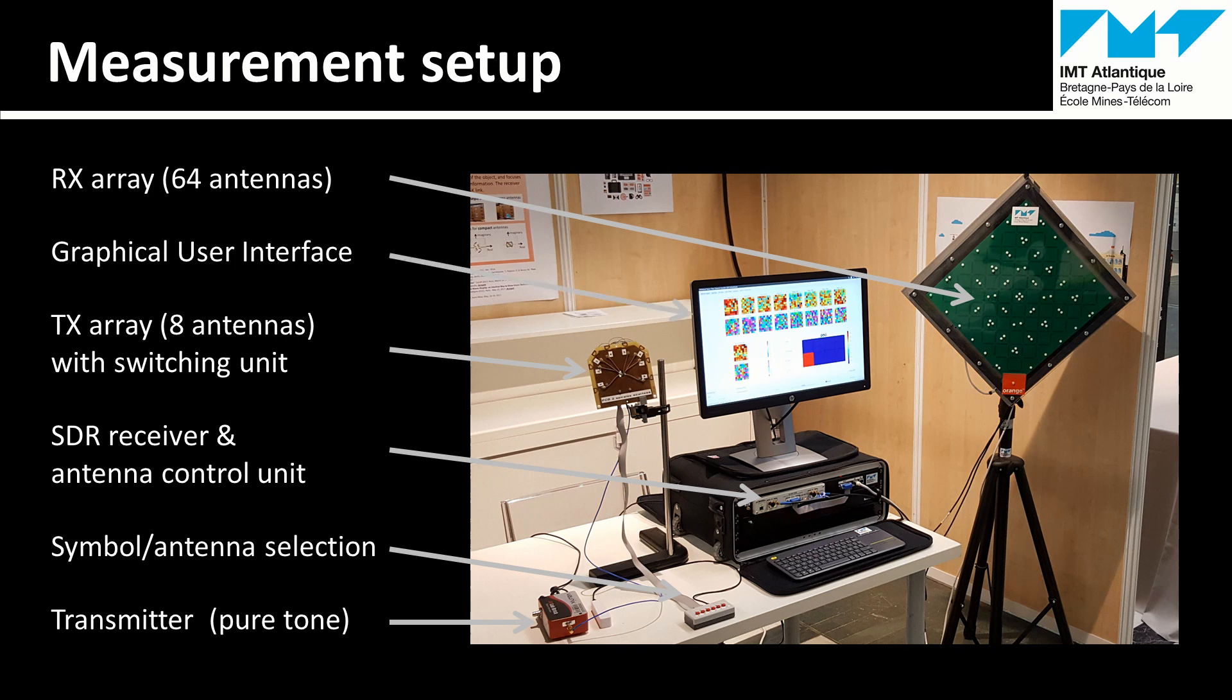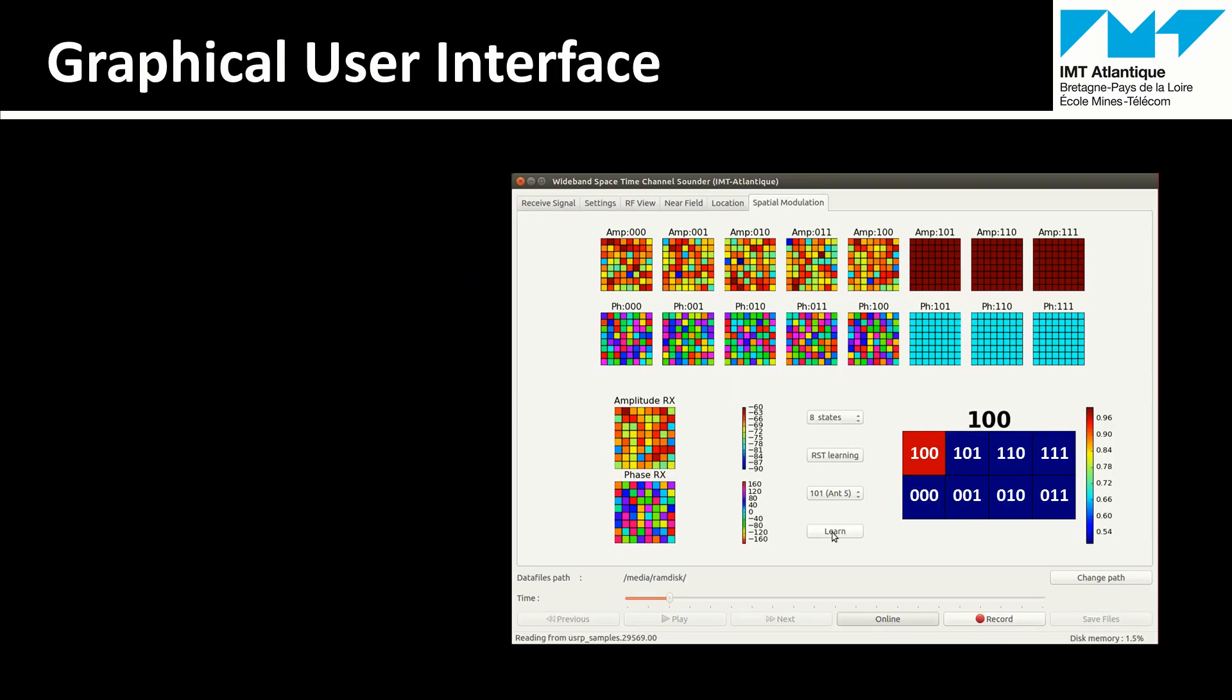Let's move to the graphical user interface of the channel sounder. This part of the screen displays in real-time the complex received signal on each antenna. One square is dedicated to the amplitude and the other one is dedicated to the phase. The color bars of the amplitude and phase are plotted in dB and degree respectively.